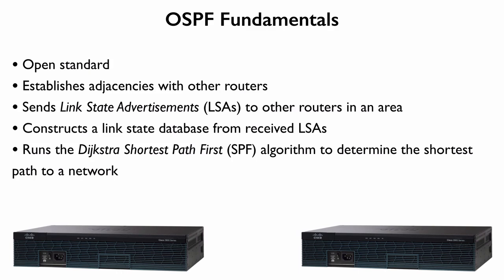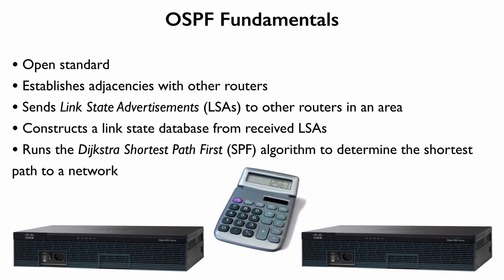Cost is a function of bandwidth. Unlike EIGRP, which by default looks at bandwidth and delay, OSPF is just going to be considering bandwidth as it makes its calculation. This Dijkstra Algorithm is calculated for each area, so a router sitting at the boundary of a couple of areas has to run the Dijkstra Algorithm for each of them. A router contained completely inside one area only has to run it for that one area.